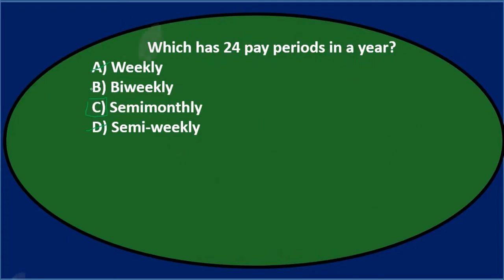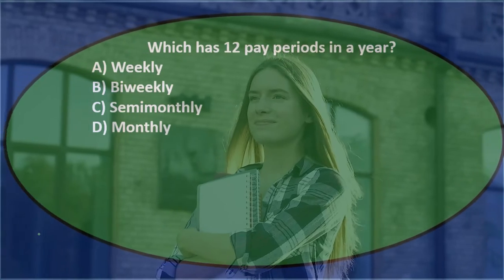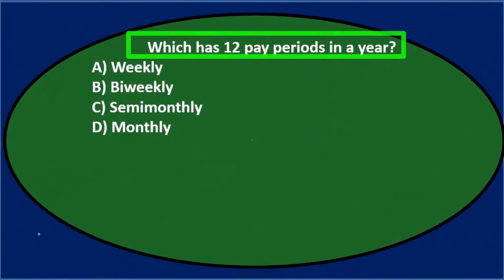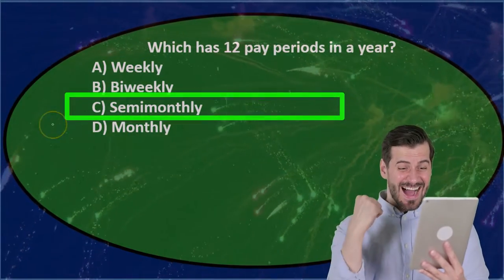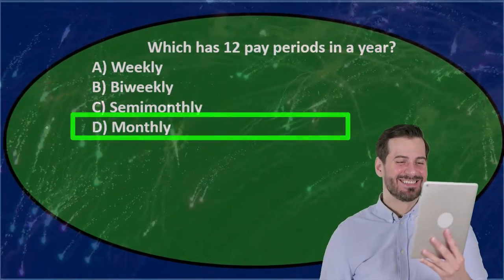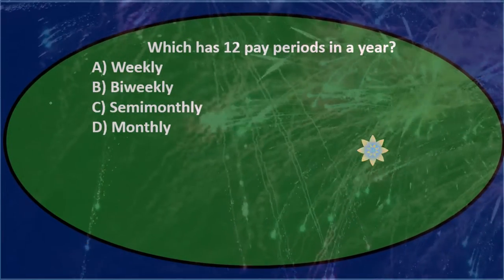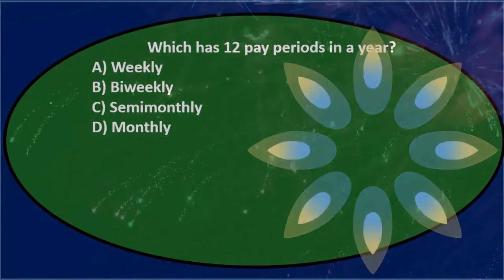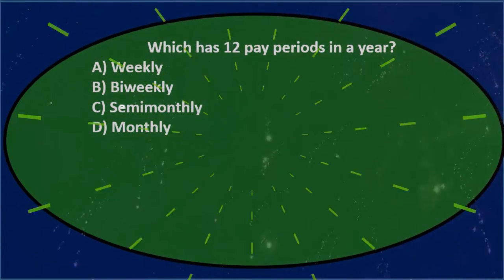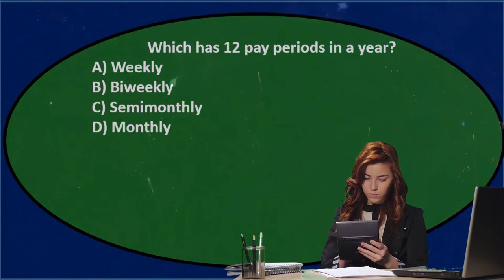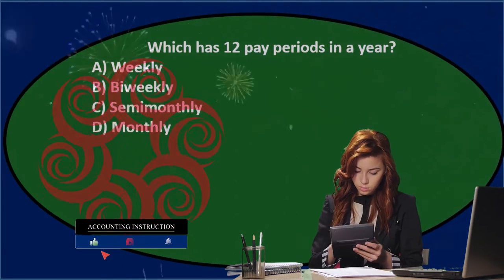Next question: which has 12 pay periods in a year? A) weekly, B) bi-weekly, C) semi-monthly, D) monthly. We'll go through this again. This one is pretty straightforward. What we're asking is: which of these results in giving paychecks to employees — or doing it electronically — 12 times a year?